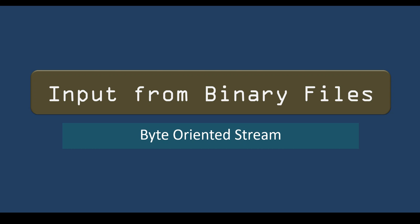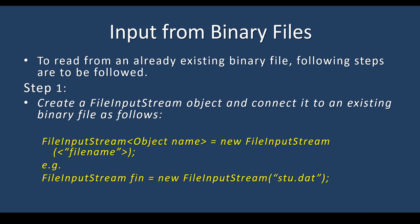In this video, we are going to discuss input from binary files. We are going to use a byte-oriented stream class to get input from data already stored in a binary file, retrieve it, and display it on the screen. Following steps are to be followed to read from an already existing binary file.